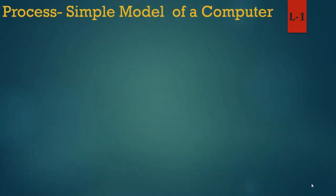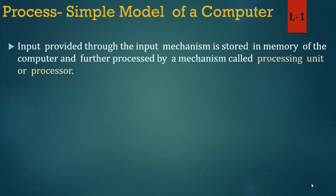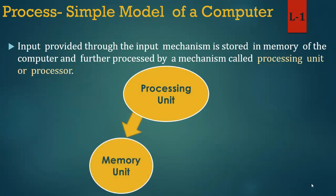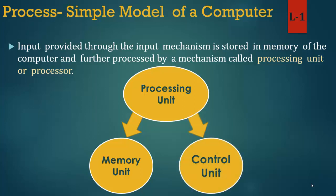Process — simple model of a computer. Input provided through the input mechanism is stored in the memory of the computer and further processed by a mechanism called the processing unit or processor. Now we learn memory unit in detail. Prakriya — computer ka saral model. Input tantra ke maadhyam se pradaan kiye gaye input ko computer ki smriti mein sangrahit kiya jata hai aur aage processing unit ya processor namak ek tantra dwara sansaadhit kiya jata hai.